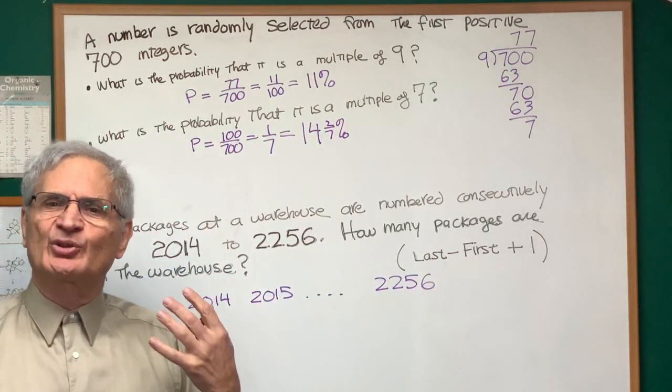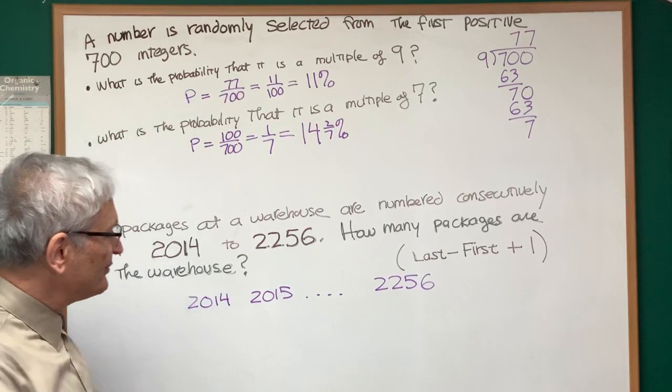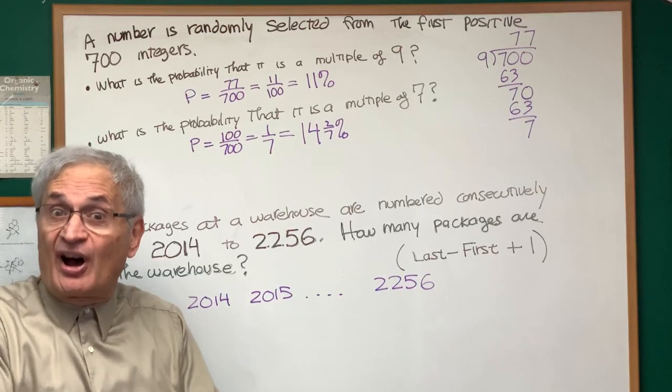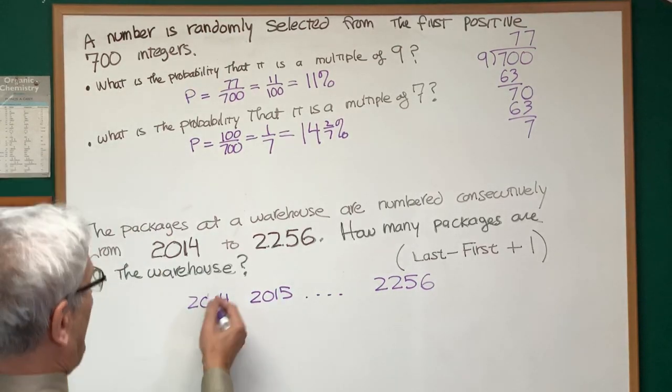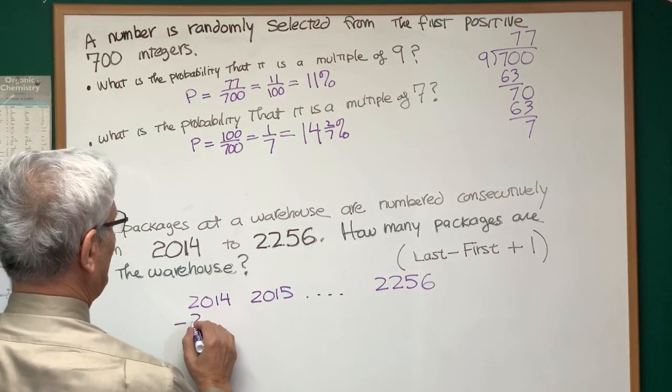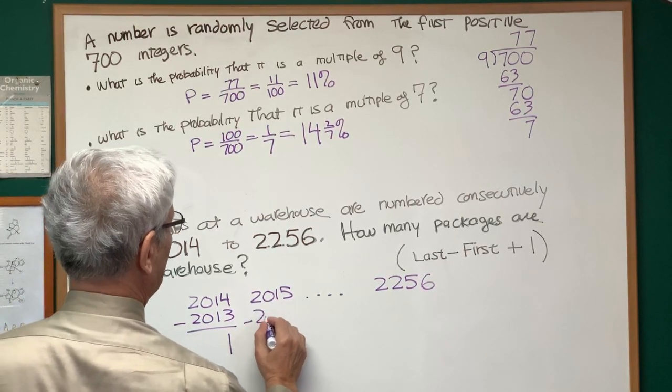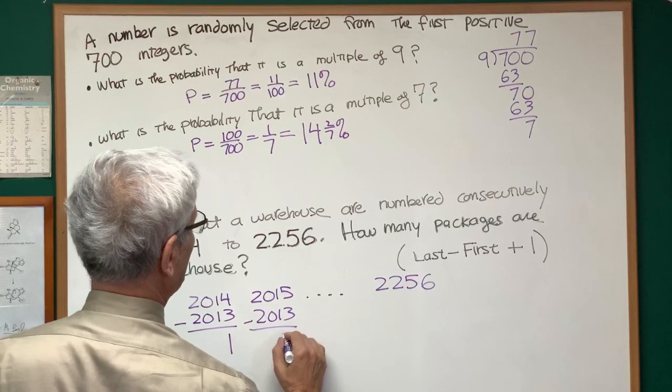And what I want to do is create a one-to-one correspondence between this sequence of numbers and the counting numbers: 1, 2, 3, 4, 5. How would I do that? Well, how would I get 1 from the first number? I would subtract 2013 and get 1. I subtract 2013 from the second number to get 2.